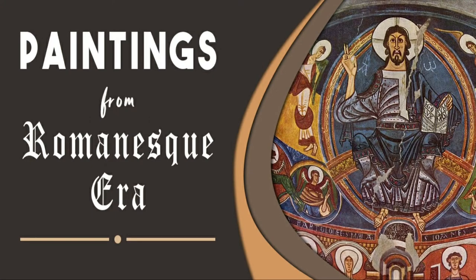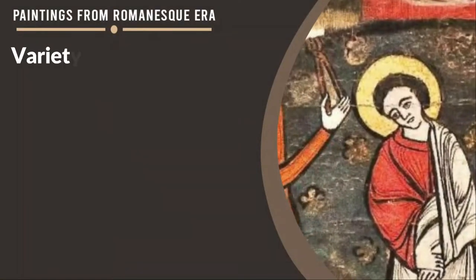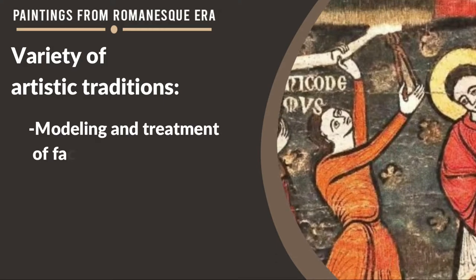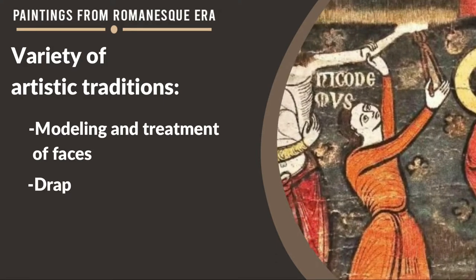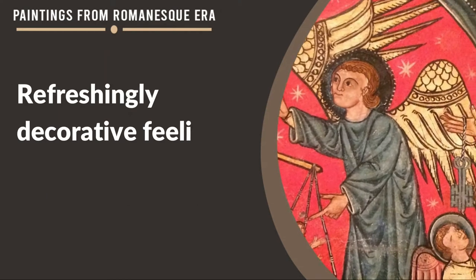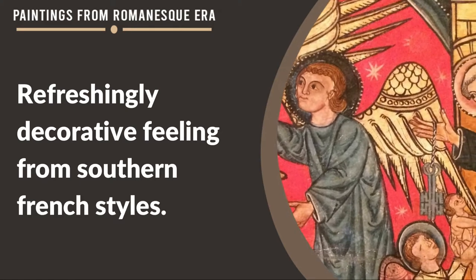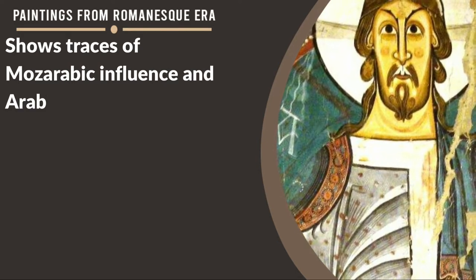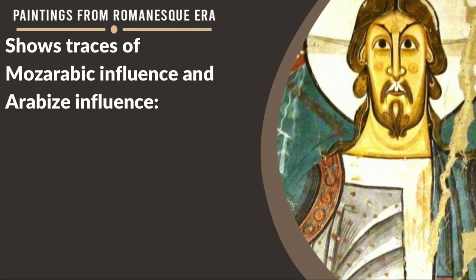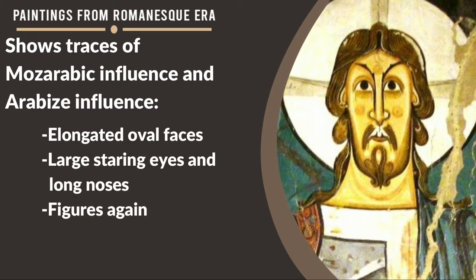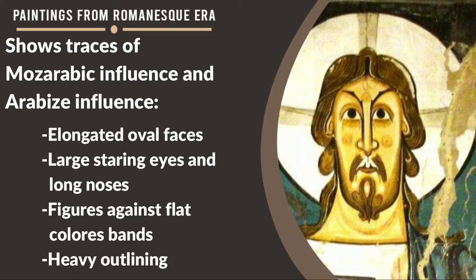Paintings from the Romanesque era. It has a remarkable variety of artistic traditions such as modeling and treatment of faces and draperies that follow Byzantine convention. While the refreshingly decorative feeling comes from southern French styles. It also shows traces of Mozarabic influence — an Arabized influence — through elongated oval faces, large staring eyes and long noses, figures against flat colored bands and heavy outlining.